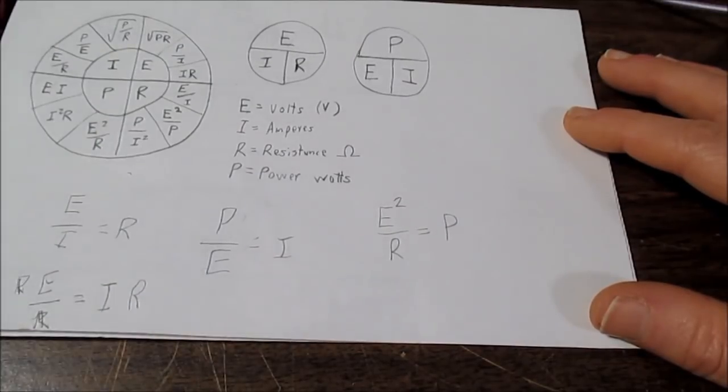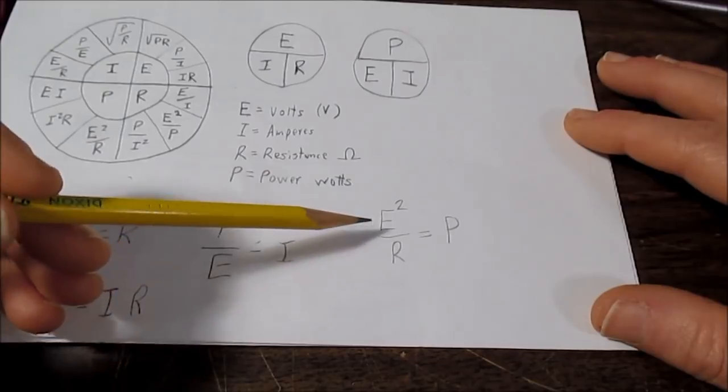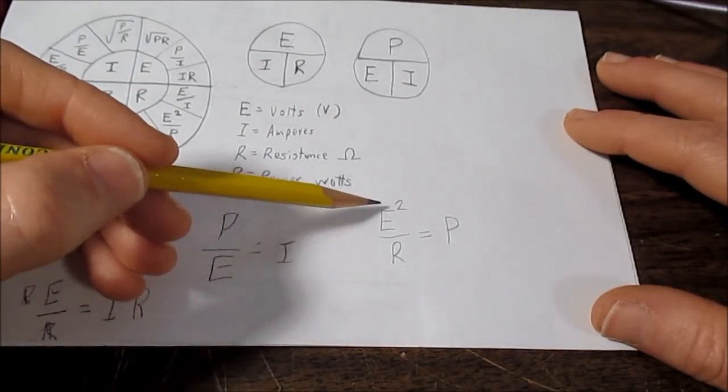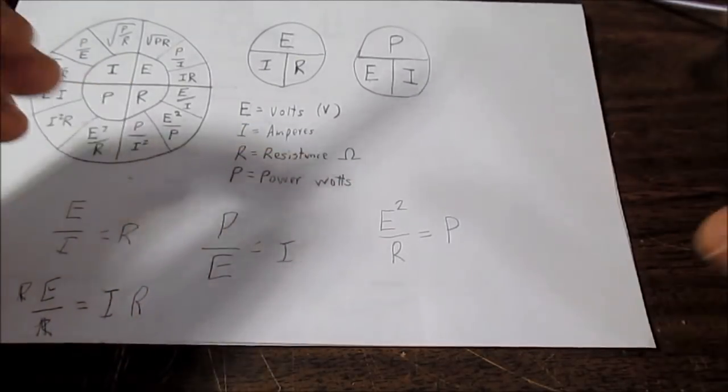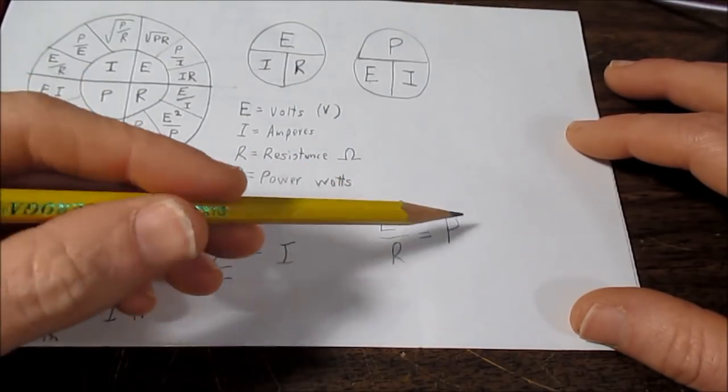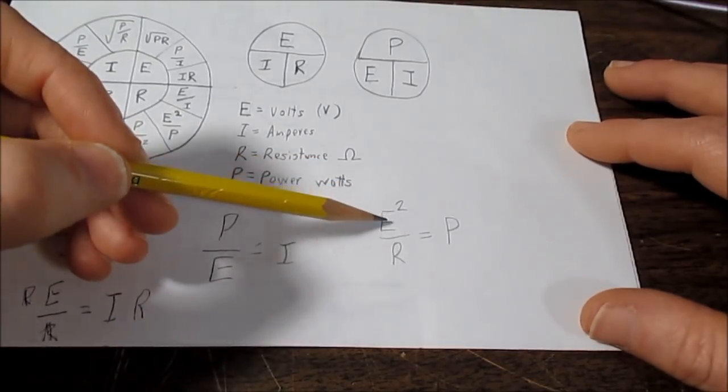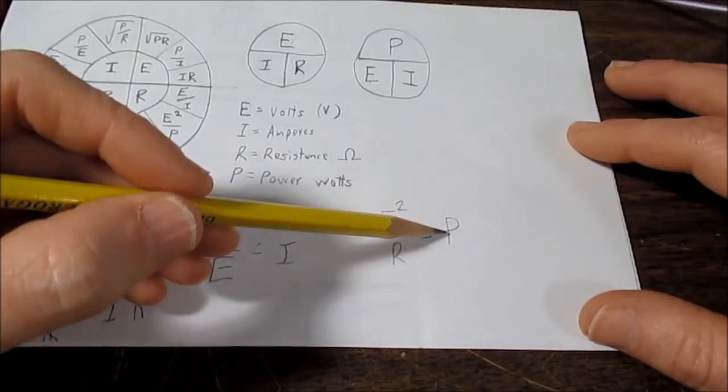So if we know voltage and resistance, and we're trying to solve for power, it's this formula here. Again, voltage is on top, easy to remember. But because it's a power equation, you know, power is involved here, we have to square that voltage. So, E squared over R is P.